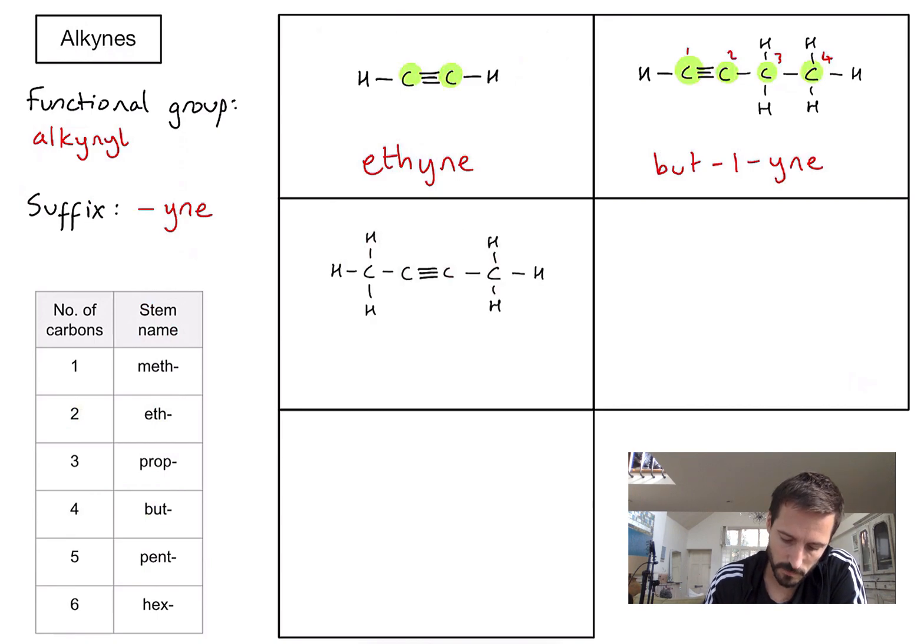Third example. Well it looks similar again. I've got a triple bond in there. I've got one, two, three, four carbons. So we know the stem name again is going to be bute.